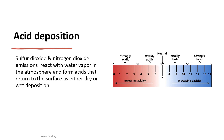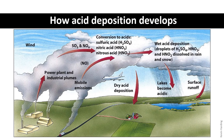Unlike an industrial scrubber where the water is collected, cleaned, and neutralized, the acidic rainwater lands on farmland, people, and everywhere else it rains, causing damage wherever it falls. The diagram shows H2SO4, HNO3, and HNO2 acids raining down on natural vegetation and industrial structures.